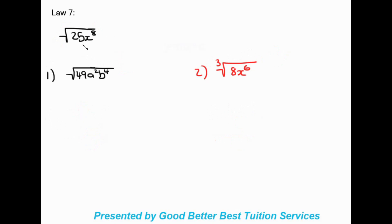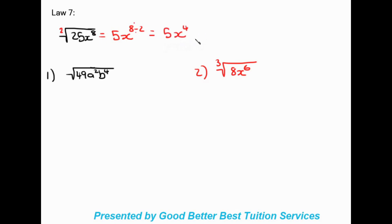Law number seven: the square root of 25 x to the power of eight. For coefficients we take the square root as normal, but for exponents we divide by the invisible two in front of the square root sign. Square root of 25 is five, and the exponent eight divided by two gives four. So the final answer is five x to the power of four.